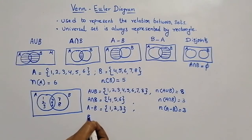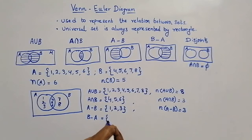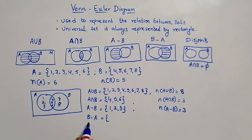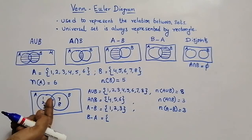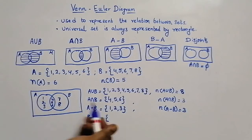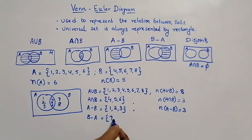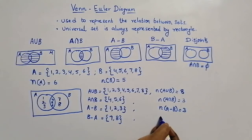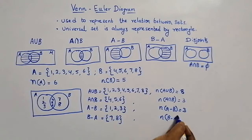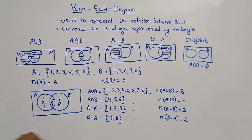Now let us find B minus A — all the elements in B avoiding elements in A. The remaining elements are 7 and 8. So N of B minus A equals 2.